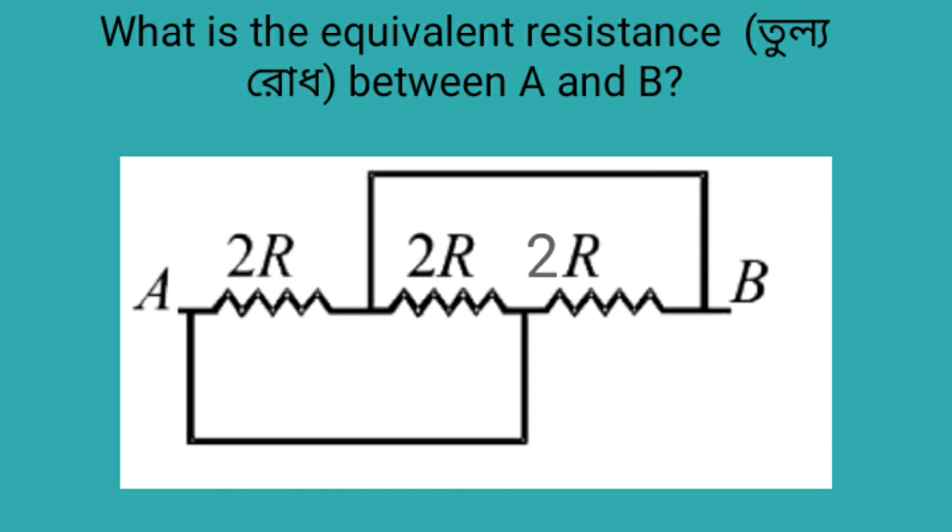Here is our first problem. Three resistors of value 2R each are connected according to the given circuit. What is the equivalent resistance between the two points A and B?